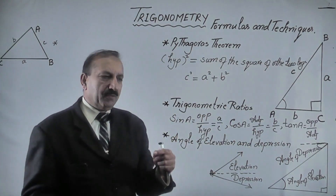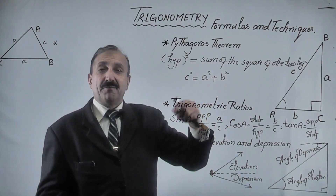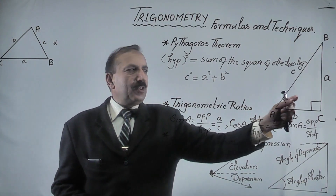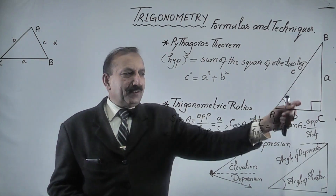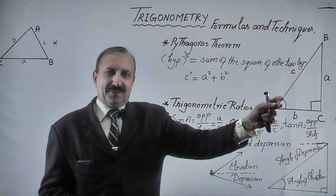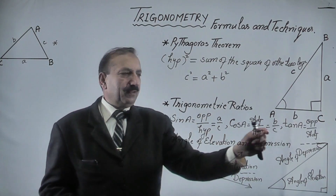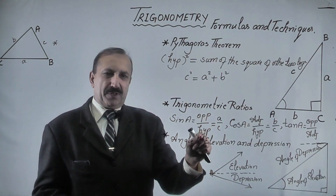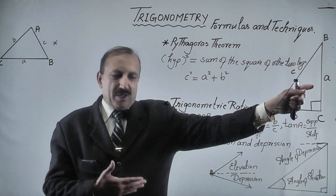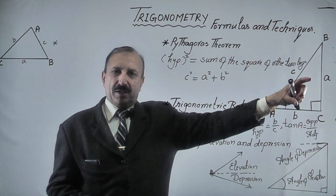They provide us the ratio between the three sides of a right-angle triangle and relate them with the angles. Here I have mentioned angle A. So according to this angle A, this side is opposite, this side is adjacent, and this side is hypotenuse — the longest side of the right-angle triangle.